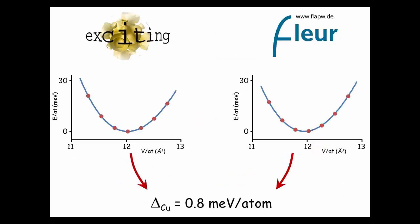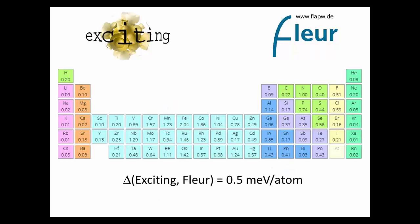So this is a specific example. FCC-Copper, at the left-hand side, done with the exciting code. At the right-hand side, with the FLEUR code, the delta for exciting and FLEUR for FCC-Copper is 0.8 millielectronvolts per atom. You do that not only for FCC-Copper, but for all of these 71 crystals. And you take the average over all of these values. And in that way, that number for exciting and FLEUR is 0.5 millielectronvolts per atom. In that way, you express in one single number a kind of deviation between these two codes.